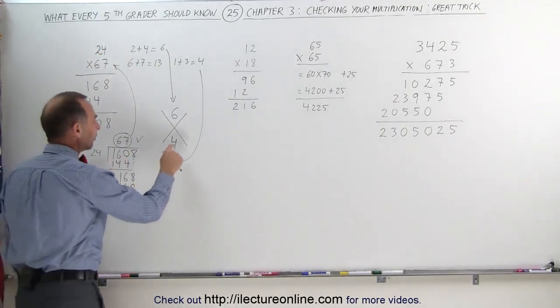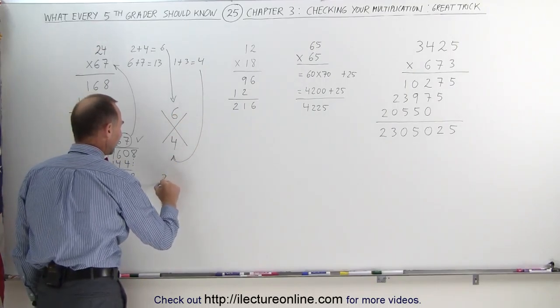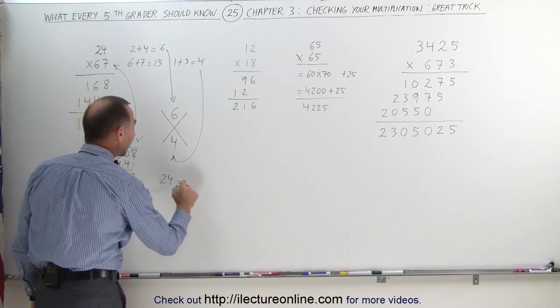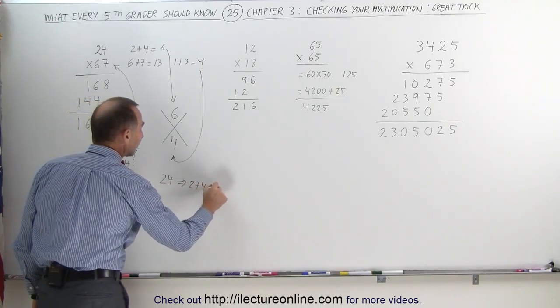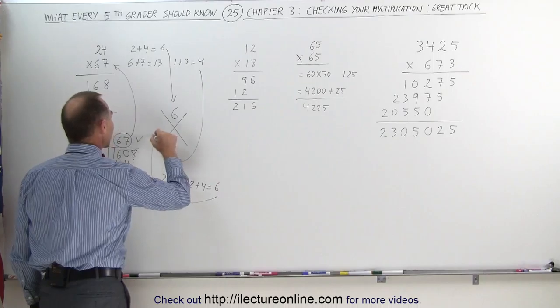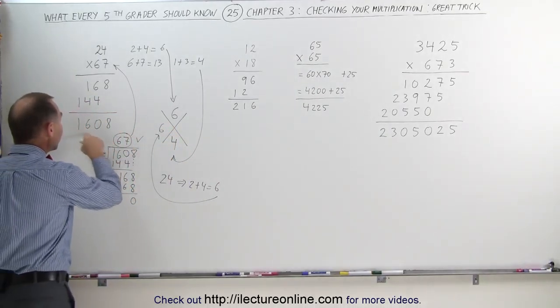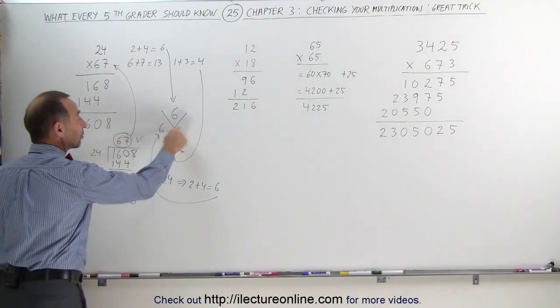Now you multiply the 4 times the 6, 4 times 6 is 24, and that means we're going to add the 2 and the 4 together, 2 plus 4 gives us 6, and we write that number over here on the left side. Now all we have left to do is add up these numbers right here to see if we get a 6 over here.